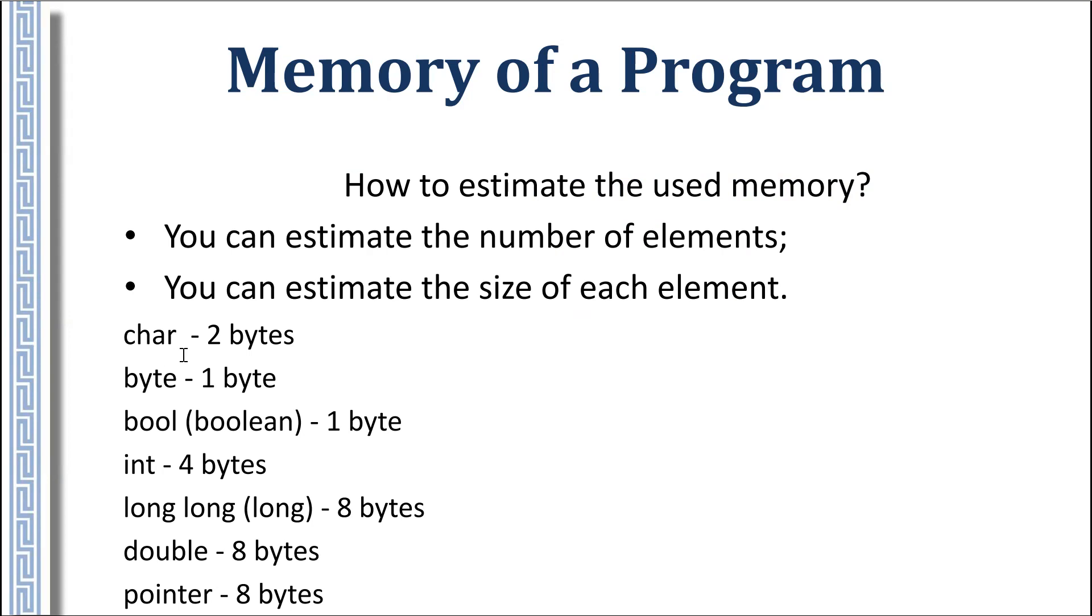We know the size of variables of each type. For example, character is two bytes because it is Unicode. Byte is one byte, integer depends on the variable - it is like four bytes, eight bytes, and some languages have 16 bytes variables, and so on.